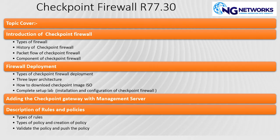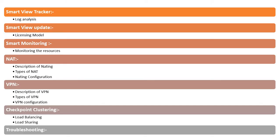A major component in Check Point firewall is SmartView Tracker — for analyzing logs and verifying traffic passing through your firewall nodes. Then there's Smart Update, where you can check your licenses: whether your license is valid, how many license types you have, what blades are active, whether you have a VPN license, and how many users can connect via VPN at a time.